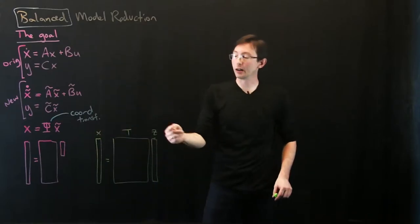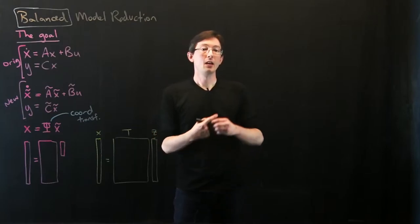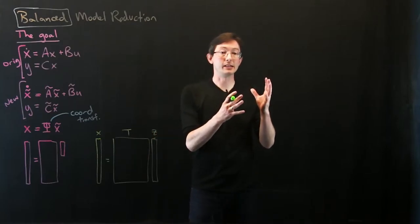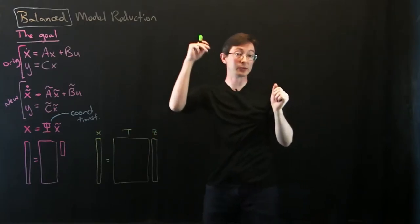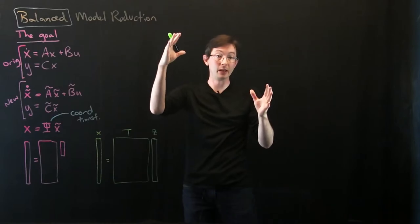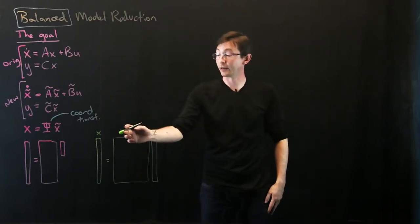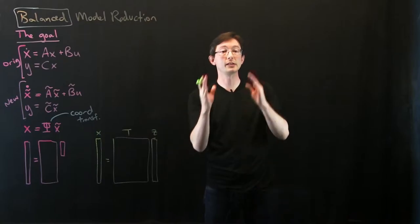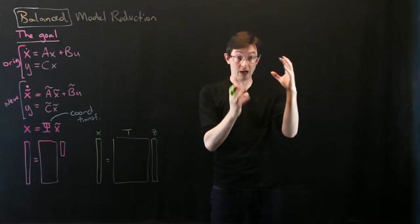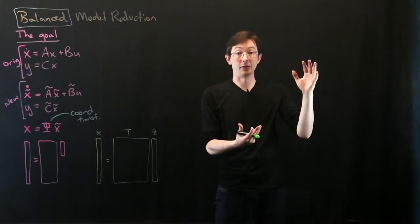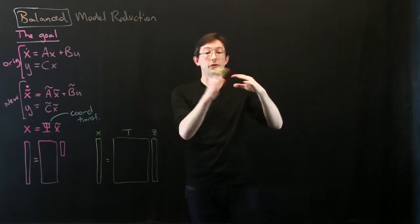Then we're going to pick a very, very special T that balances — that takes my controllability Gramian and my observability Gramian. Under this coordinate transformation, we're going to find that there are special coordinate transformations that make those Gramians equal and diagonal.